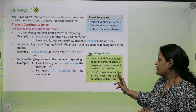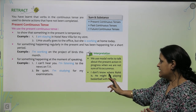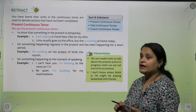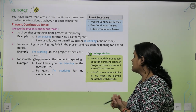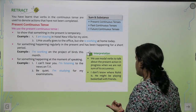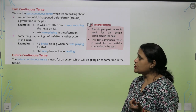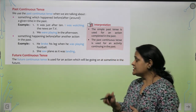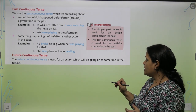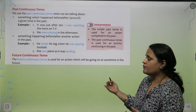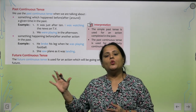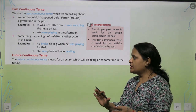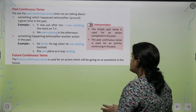'I don't know where Rohit is. He might be playing basketball with friends.' Here 'might be' is a modal verb — he may possibly be playing basketball with friends. Now, the future continuous tense is used for an action which will be going on at some time in the future — something that will continue briefly in the future. That is what the future continuous tense shows.